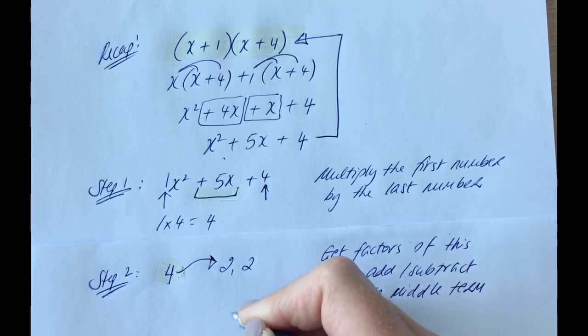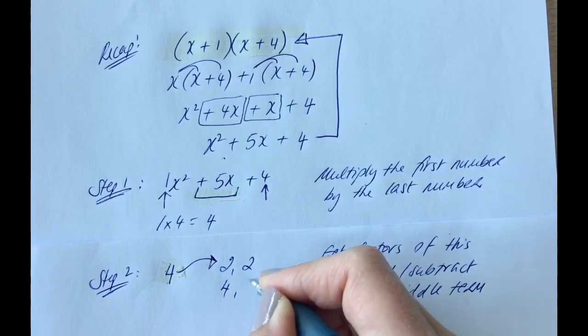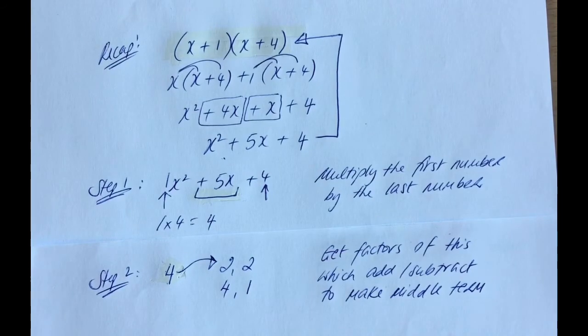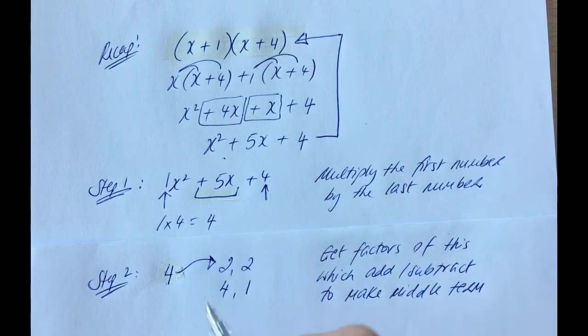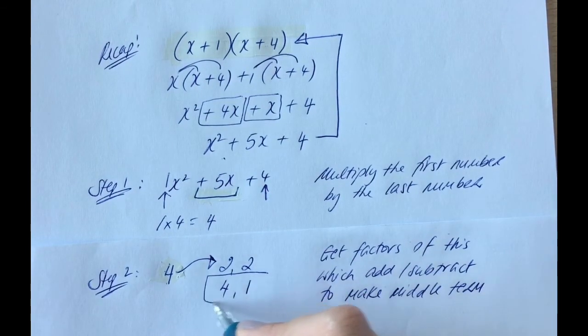Well, 2 times 2 makes 4, or 4 times 1. So here, the ones that we'll add or subtract to make the 5, which is the middle term we're looking for, is going to be the 4 and the 1.